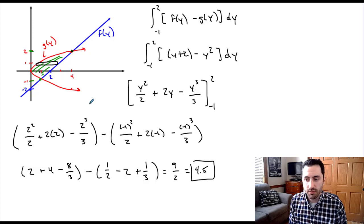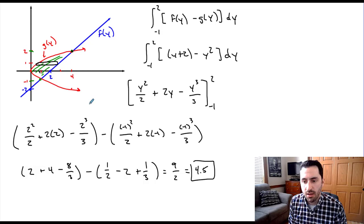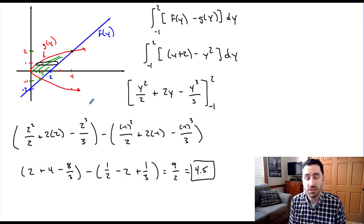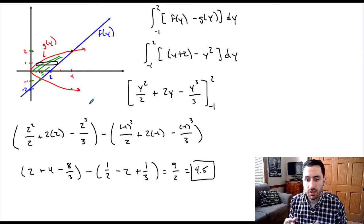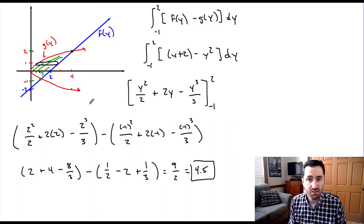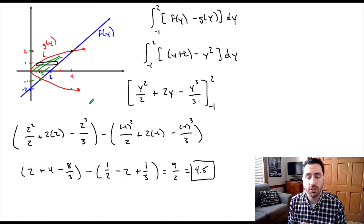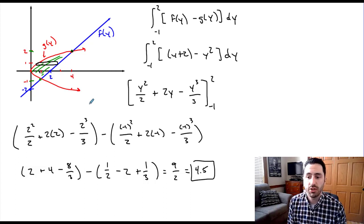Overall, that's how we find the area between two graphs by partitioning the y-axis. It's very similar to partitioning the x-axis, but we deal with functions in terms of y. If graphs don't pass the vertical line test, or if the left and right borders of the region are your functions, we can partition along the y-axis to simplify the process.